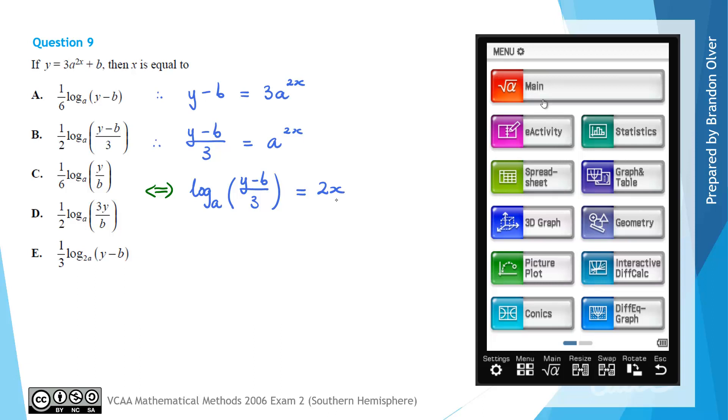So now all we need to do is divide by 2 or multiply by a half to get x by itself. So we find that we get 1 half log a and then in brackets y subtract b divided by 3 is equal to x. And from there we can identify that the correct answer for this question is option b.